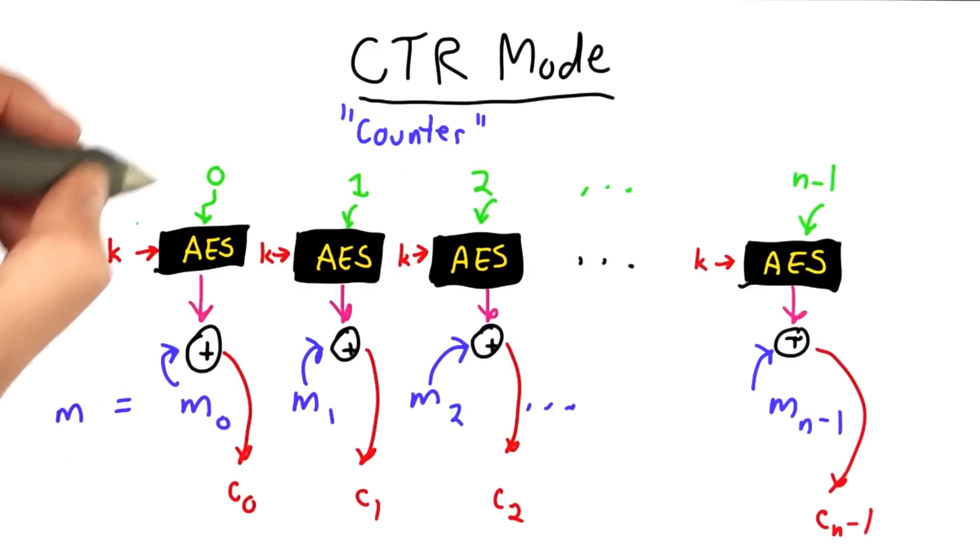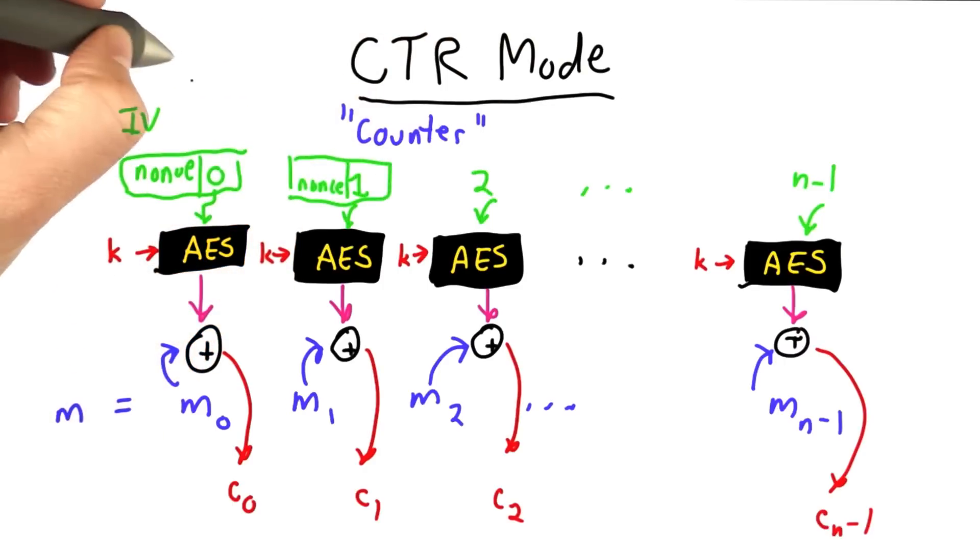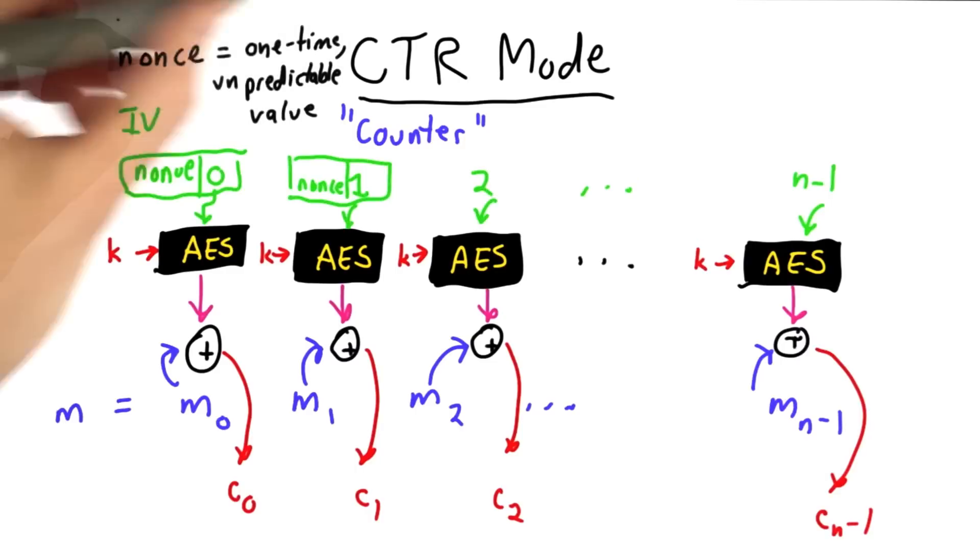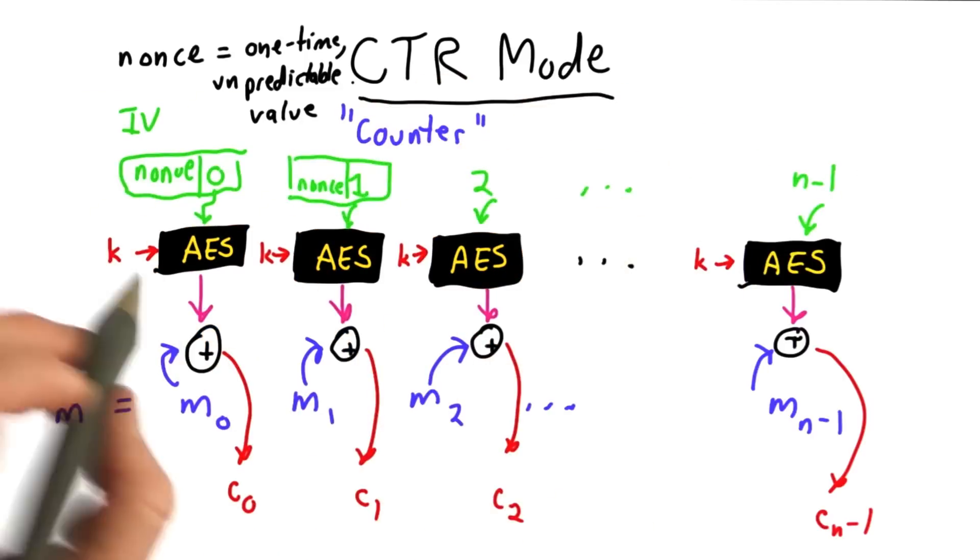So the solution to this is similar to what we did with the initialization vectors in the previous mode. What we're going to do is add a nonce. We'll append the nonce with the counter value. A nonce is very similar to a key. A nonce is a one-time unpredictable value. Unlike a key, it doesn't need to be kept secret.